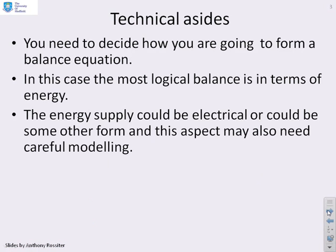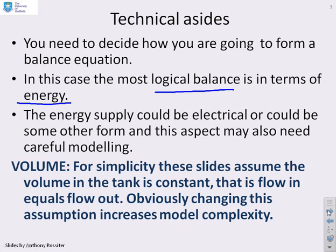Before we model this we need to think about how we're going to do it, and generally speaking with these process problems we've used balance equations. Because this is a heat exchanger the most logical balance to do is in terms of energy. The energy supply could be electrical, so that's the heater, or it could be in some other form. We are going to use steam as the main source of heat for the example shown here, but there are cases where it may be electrical and you'll need a slightly different model. For simplicity these slides assume that the volume in the tank is constant, so the flow in equals the flow out. If this assumption is not true you need to look at your modelling and be a little bit careful because the model will be slightly more complicated.